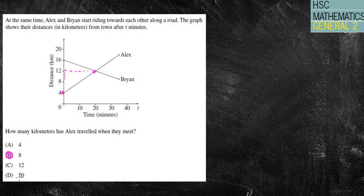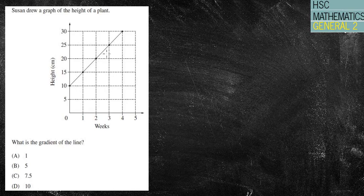Okay, pretty straightforward in that one. Alright, next question. Question 3. Susan drew a graph of the height of a plant. What is the gradient of the line?